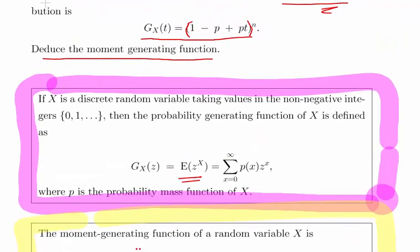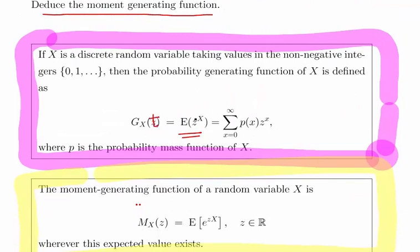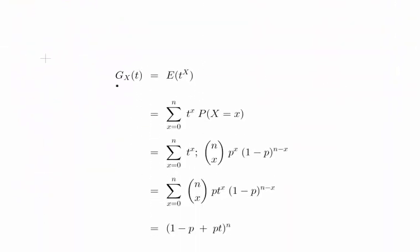Because we are working in terms of t up there, we just change that to t. So the PGF is the expected value of t to the power of x — that is, the sum of probability of x times t to the power of x. We are going to treat it like a discrete random variable with just a bit of a twist.